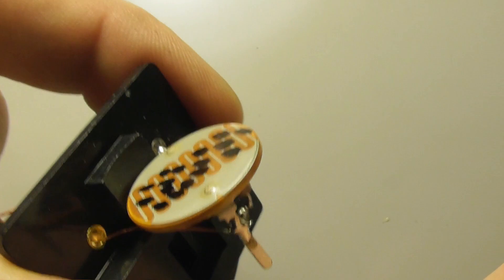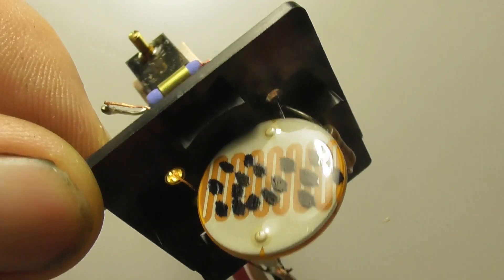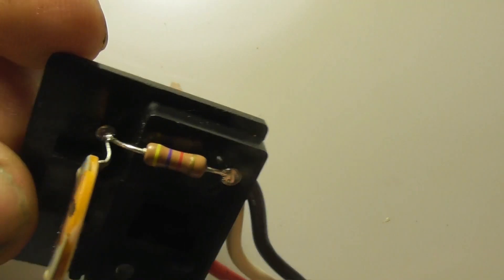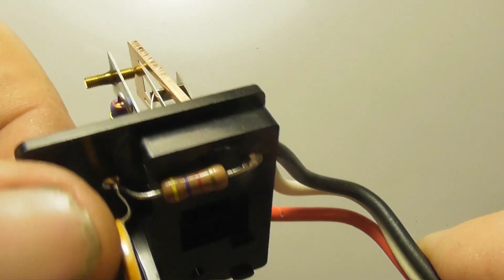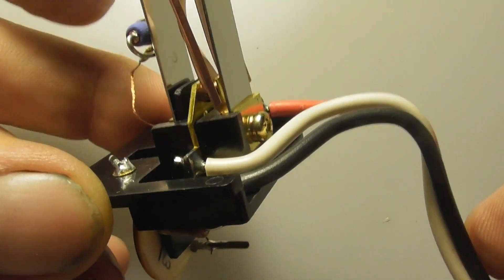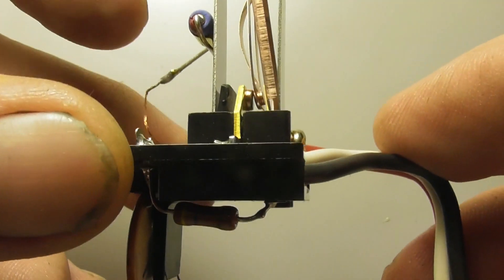Power goes through the photocell, which will adjust. The output from the photocell goes through another resistor, 4.7k, to the neutral which is black.